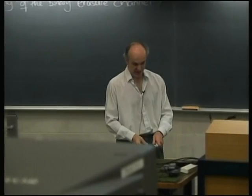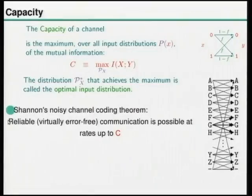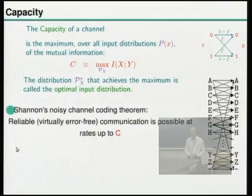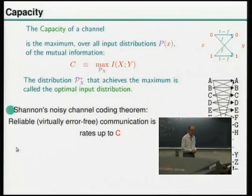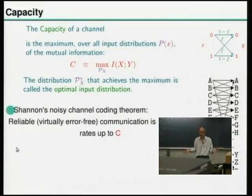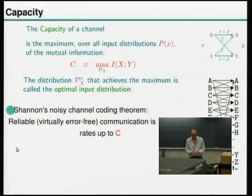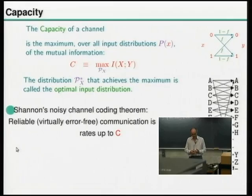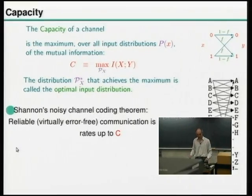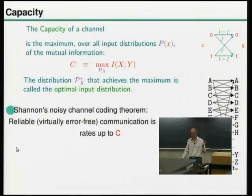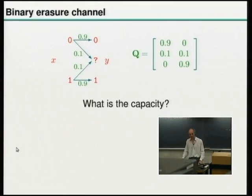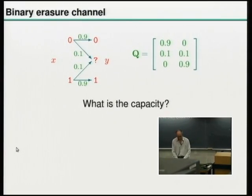I'd like us to start by thinking about the binary erasure channel. In the last couple of lectures we established Shannon's noisy channel coding theorem: for any channel you can work out its capacity by maximizing mutual information, and then it's possible to make an encoder and a decoder that communicate reliably over that channel — meaning you can get the error probability as close as you like to zero — but you can always communicate at any rate up to the capacity.